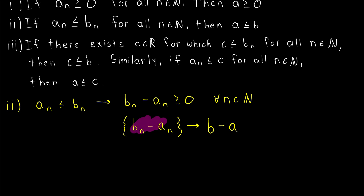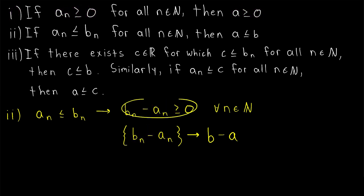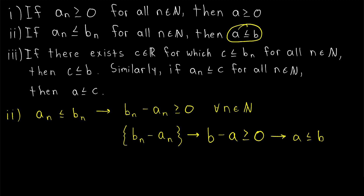Remember, every term of this sequence b_n minus a_n is greater than or equal to zero. And by result number one, which we just proved, if every term of a convergent sequence is greater than or equal to zero, then its limit is greater than or equal to zero. Hence, the limit of this sequence, b minus a, must be greater than or equal to zero. Then that implies, adding a to both sides, that a is less than or equal to b. And that's precisely what we wanted to prove.